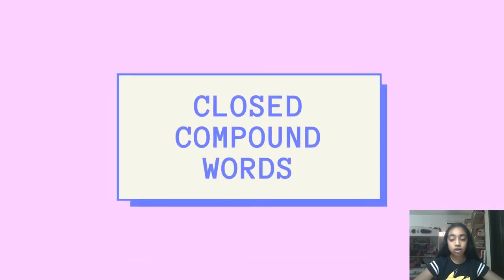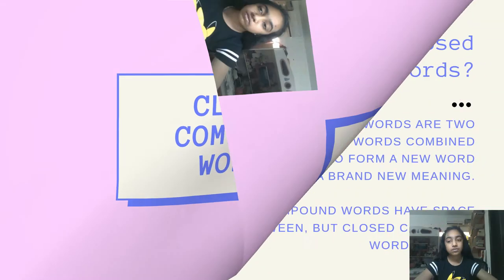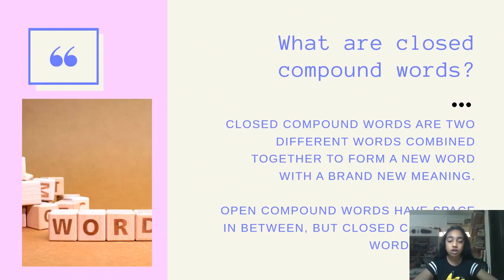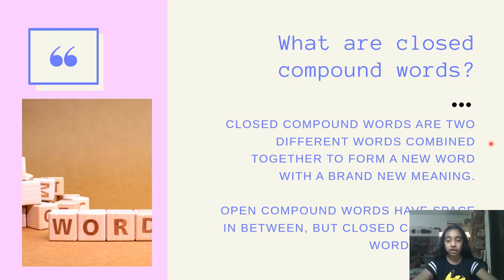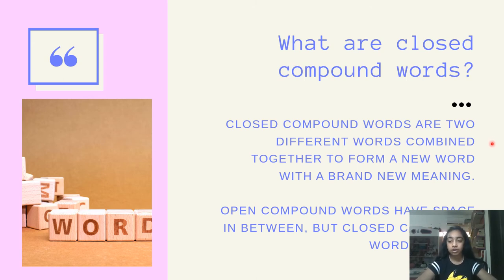Now, what are closed compound words? Closed compound words are two different words combined together completely to form a new word with its own new meaning. Open compound words are the same thing but they have a gap in between. Closed compound words, as suggested by the name, don't have a gap in between — they are completely combined together.